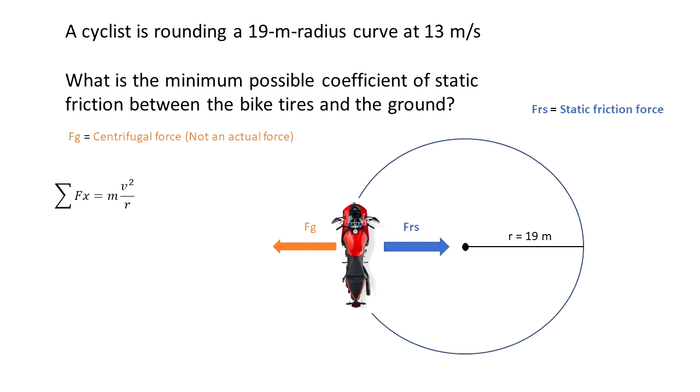So the summation of the forces in the direction of the center is equal to mv squared over r. v is given and r is given too.